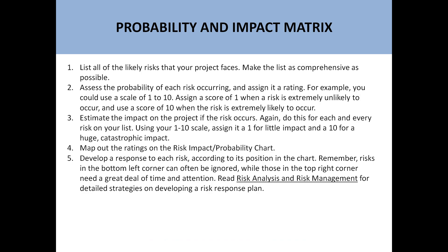The process is: first of all, we have to identify all the risks. Risk is the uncertain condition of a project. Then assess the probability of each risk occurring and assign it a rating. For example, you could use a scale of 1 to 10 — assign a score of 1 when a risk is extremely unlikely to occur, and a score of 10 when the risk is extremely likely to occur.